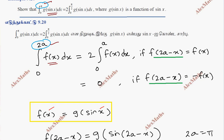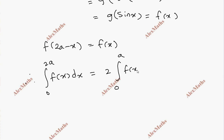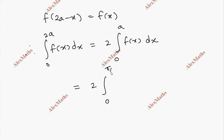Since sin(pi minus x) equals sin x, therefore integral 0 to 2a of f of x dx equals 2 times integral 0 to a of f of x dx. With 2a equal to pi, this becomes 2 times integral 0 to pi by 2 of g of sin x dx.